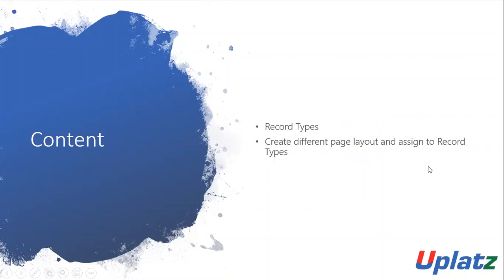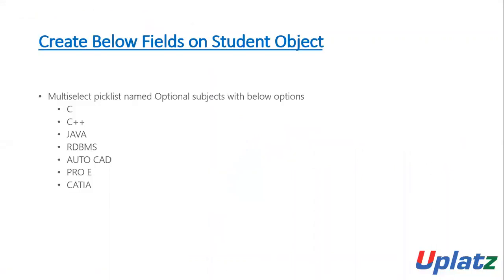In today's session we will be talking about record types, and we will create different page layouts and assign them to record types. But before we jump right into the record types, we need to create a couple of fields on the student object. Here I have mentioned a picklist name.